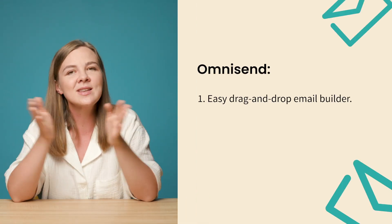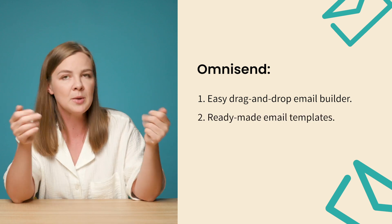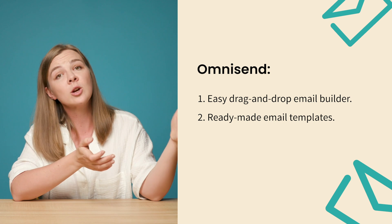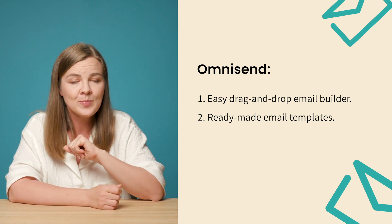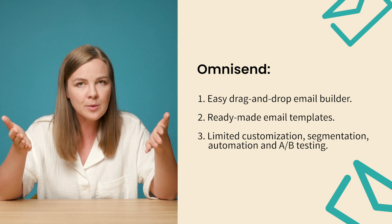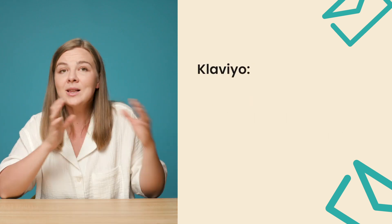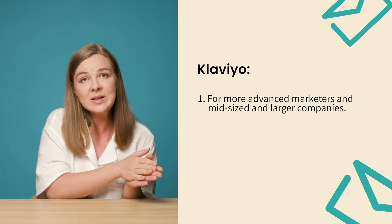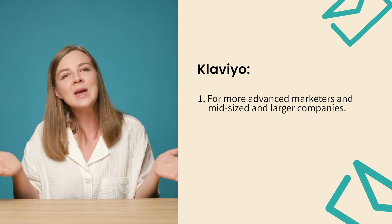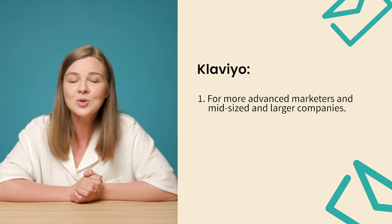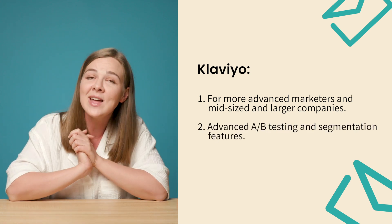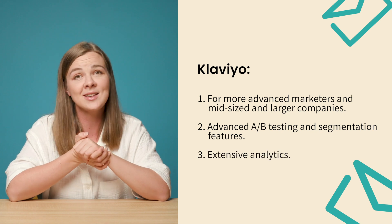In my opinion, both OmniSend and Klaviyo are great solutions for ecommerce brands — you should choose the one that meets the exclusive needs of your business. OmniSend allows the creation of beautiful, shoppable emails quickly using their drag-and-drop builder and ready-made templates, and is geared more towards marketers who are fine with templates for a shorter learning curve and don't need to go super deep on segmentation, automation customization, or A/B testing. Klaviyo feels like the optimal solution for more advanced marketers and mid-sized to larger companies — if you're making 7 figures in annual revenue, it's time to consider Klaviyo and use those advanced features.